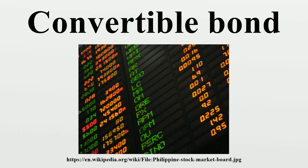Packaged convertibles, or sometimes bond-plus-option structures, are simply a straight bond and a call option or warrant wrapped together. Usually the investor would be able to trade both legs separately. Although the initial payoff is similar to a plain vanilla one, packaged convertibles have different dynamics and risks, since at maturity the holder would not receive some cash or shares, but some cash and potentially some shares. They would, for instance, miss the modified duration mitigation effect usual with plain vanilla convertible structures.